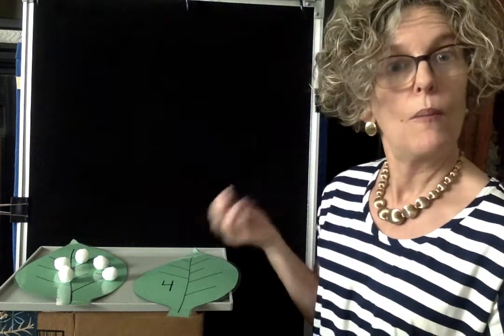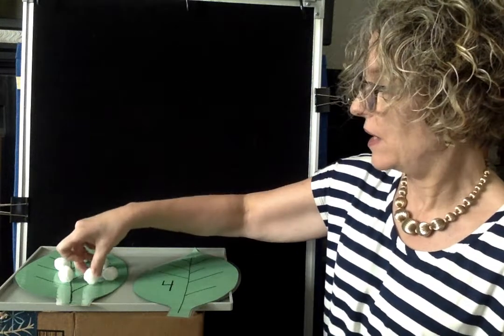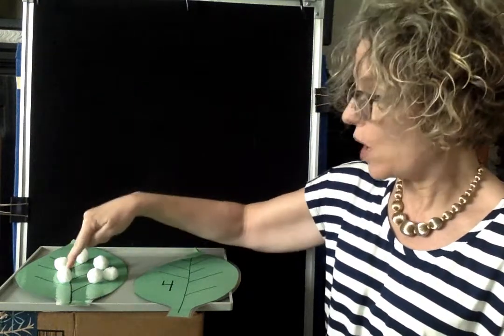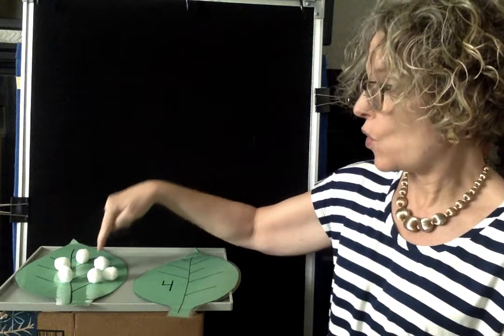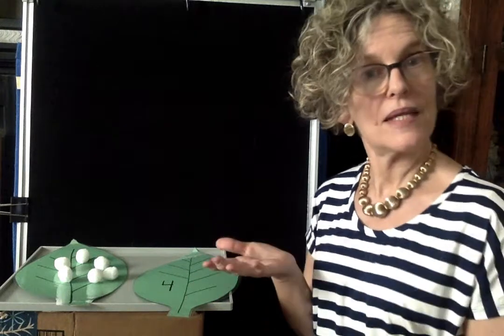But if your child is not there yet, they always have to use the concrete objects. So you say, okay, now put one more there and let's see how many there are all together. And then have your child count them out and make sure that they touch with their finger each time they say the number. One, two, three, four, five, six. So we had five. One more makes six.